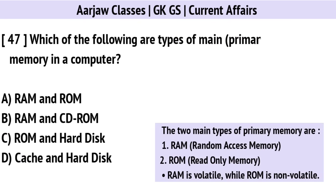Which of the following are types of primary memory in a computer? The correct option is A: RAM and ROM.